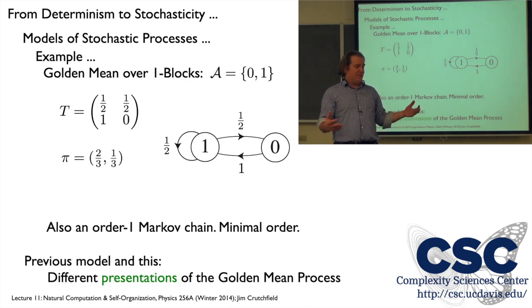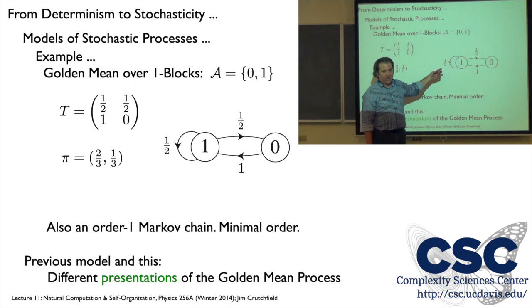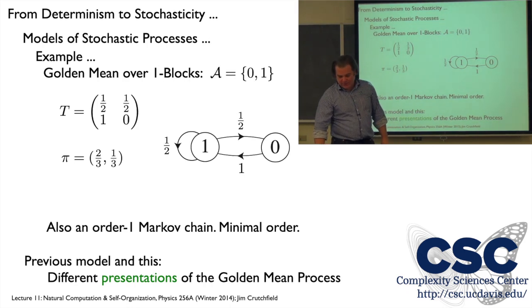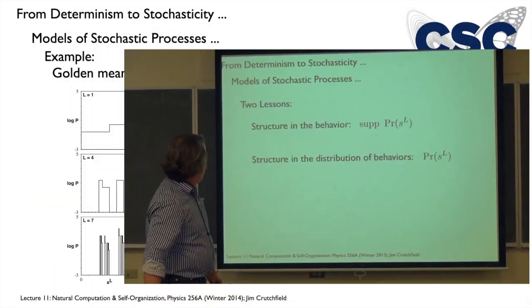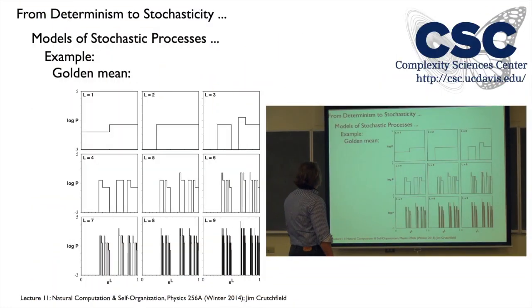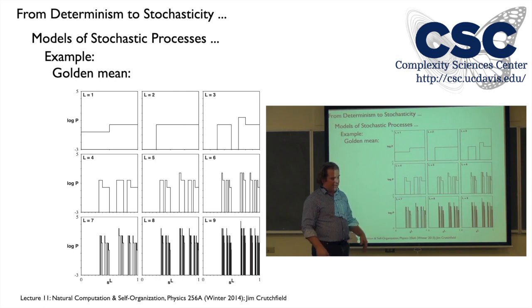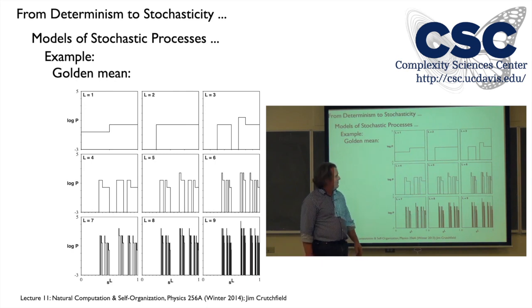Sometimes it's a good thing to have different models — certain properties are easier to calculate or easier to work with. Trying to find transformations from one kind of model class to another can be very helpful, especially for simplified calculations. The golden mean is a nice example combining the bias coin behavior — complicated probability amplitudes — and now also a restriction: certain sequences don't occur.